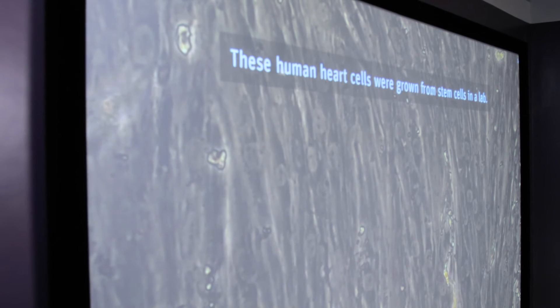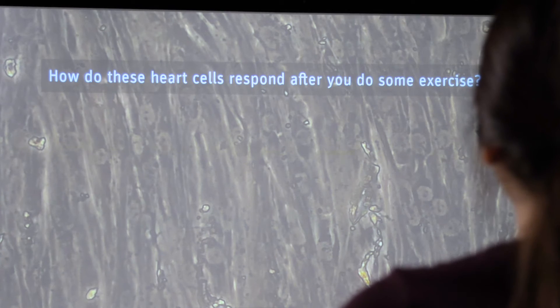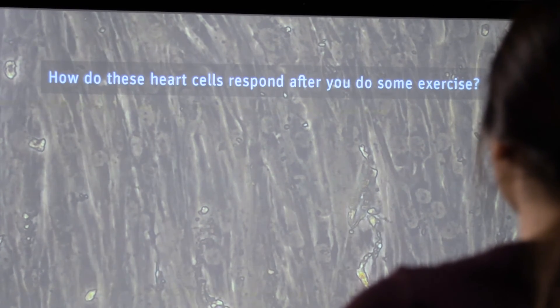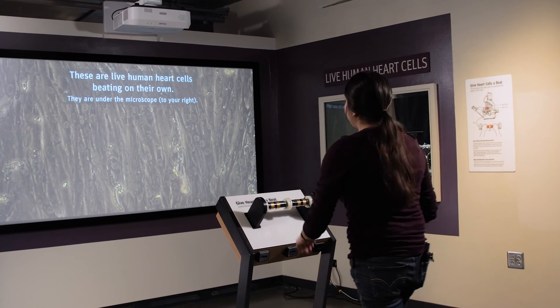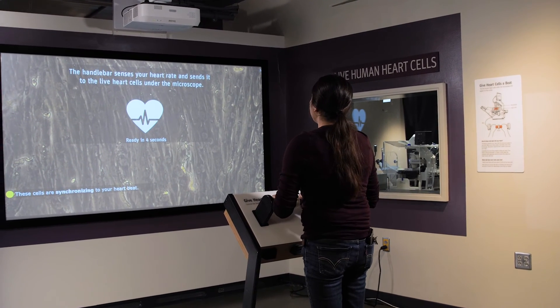So the visitor gets to see the cells on a huge screen in front of them being paced in time with their heart. Then there are a few text prompts that come up on the monitor asking them to exercise or maybe let a friend use it and see if they can observe the difference that's happening.